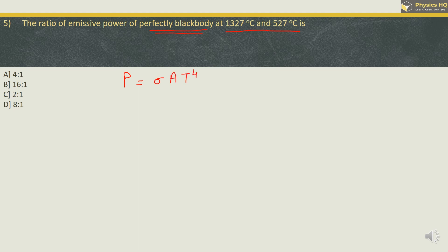P is emissive power or radiant power. Sigma is nothing but Stefan's constant. A is area of the black body and T is the temperature. For a given black body, area will also be fixed and sigma will also be fixed. We can write it as P is directly proportional to T raised to 4. So, we can have P1 upon P2 is equal to T1 upon T2 raised to 4.